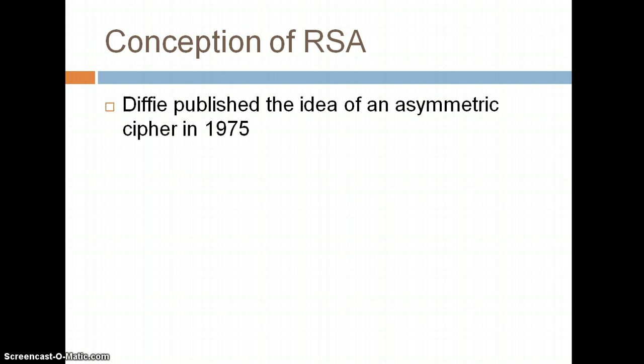Diffie published an idea of an asymmetric cipher in 1975. Up until this point, all the ciphers had been symmetric, meaning the encryption key and decryption key were identical. He had this idea of an asymmetric cipher, meaning you could have this public key that you could give to whoever, and then you'd have a private key that you'd keep to yourself to decrypt the message, and that would kind of solve the issue of the key distribution problem.